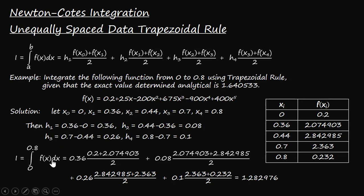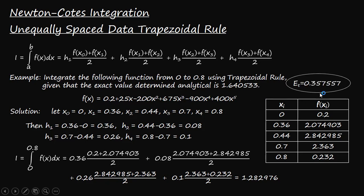Substituting these values into the formula, the integration of f(x) from 0 to 0.8 is approximated as 1.282976. The exact value of the integral is 1.640533, so the corresponding error between these values is 0.357557. This is how we can apply the Newton-Cotes trapezoidal rule on unequally spaced data to get the approximate integral.